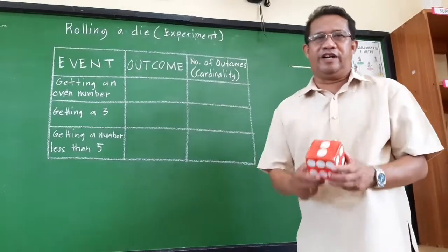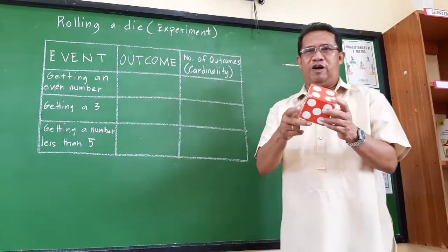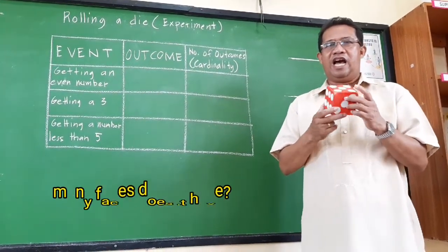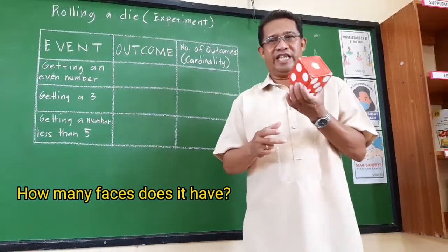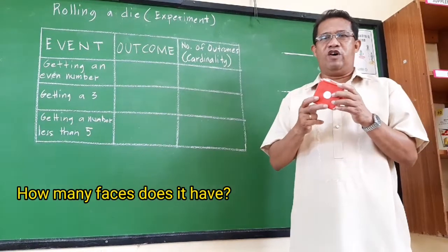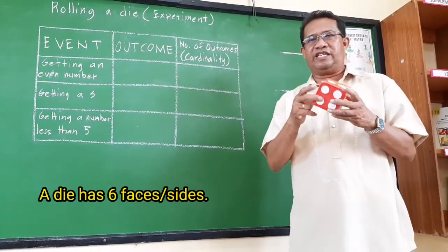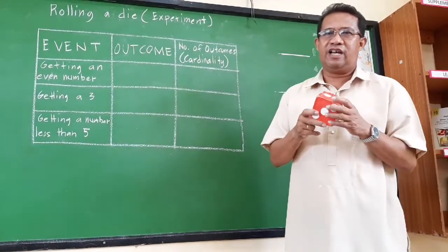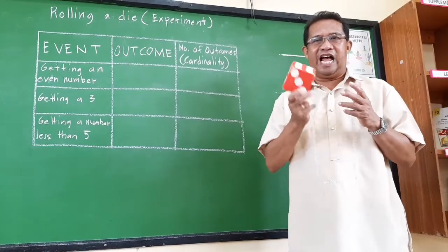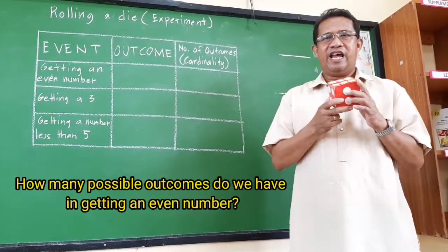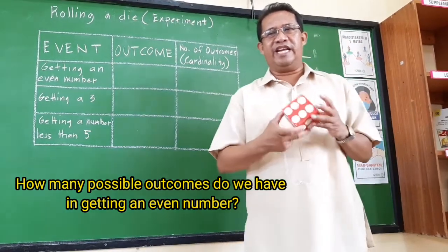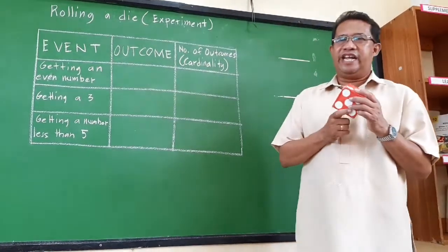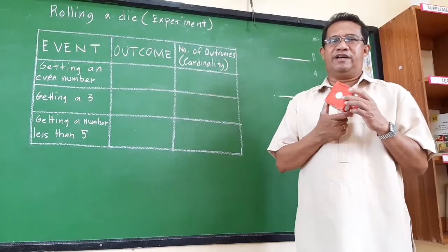Let us observe a die. This is an example of a die. In this die, how many faces does it have? We know that there are 6 faces. Since there are 6 faces, when we roll this die, letter A: how many outcomes do we have in getting an even number? To answer this, let us identify the even numbers in the die.